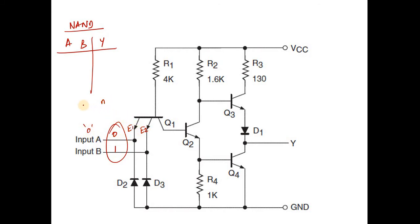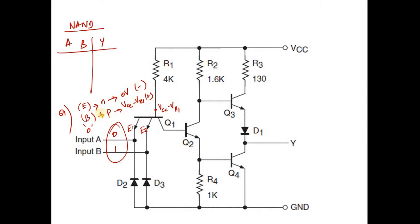E2 would also be shorted out since they have parallel connections. Effectively, the emitter — the N-type terminal of transistor Q1 — is at 0 volt. The base of Q1 is at VCC minus Vr. The base, being P-type, has a more positive voltage with respect to the emitter, which means the emitter-base junction is forward biased.